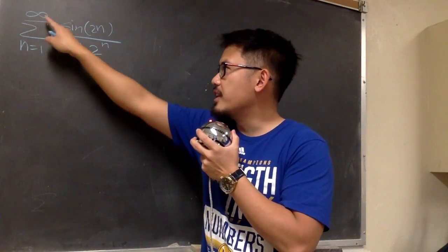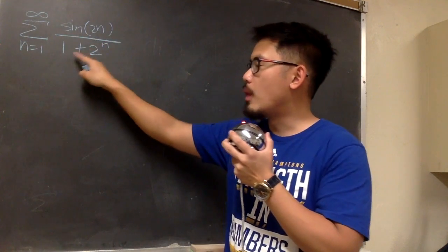Converge or diverge, sigma where n goes from 1 to infinity, sine of 2n over 1 plus 2 to the n.